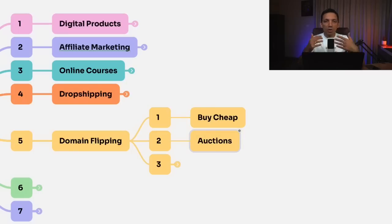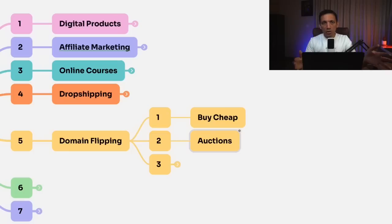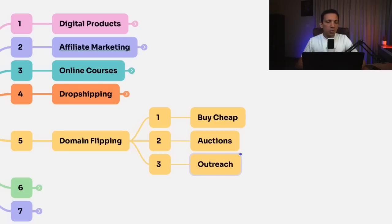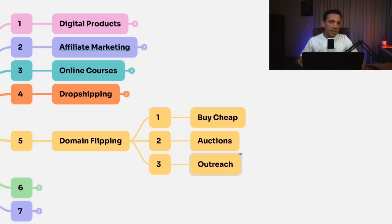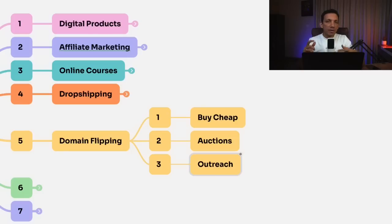The third idea about domain flipping is to do outreach. To create a really good passive income through this, have a dedicated team who can do email outreach. If you bought some celebrity domains and the celebrity doesn't have that domain yet, get your team to reach out saying, 'Would you like to buy this particular domain? We have a special offer right now — reply back if you're interested.' So this is like real estate: buy cheap, sell high, but do it in a very strategic way.